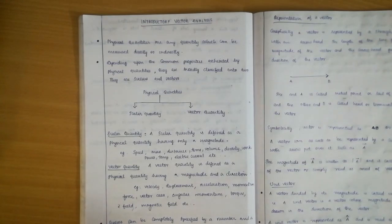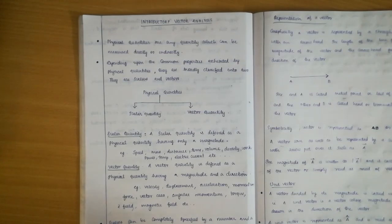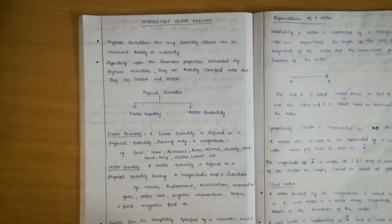What are scalar quantities? A scalar quantity has only magnitude. Magnitude is a physical quantity defined by a number and a unit. For example, 1 kg — here 1 is the magnitude and kg is the unit. So the magnitude combined with a unit gives us a scalar quantity.